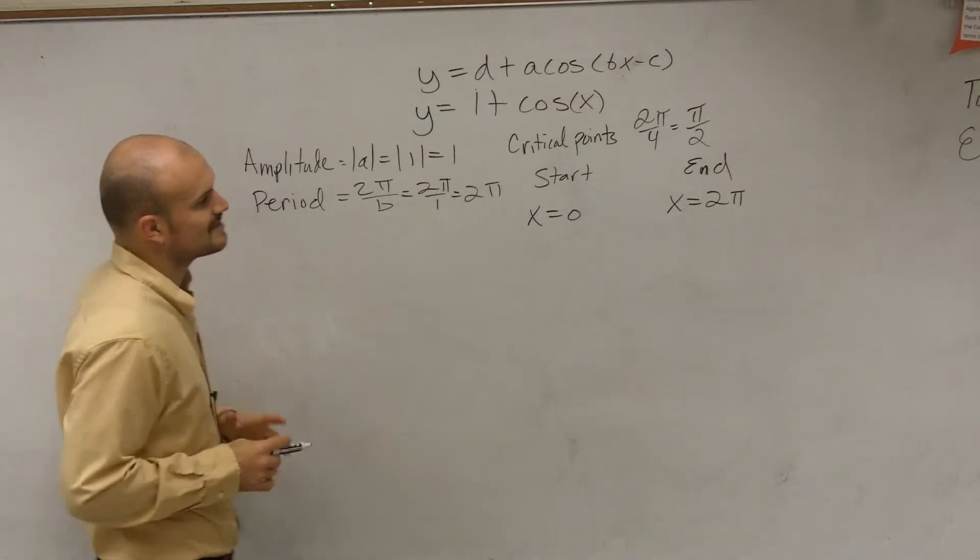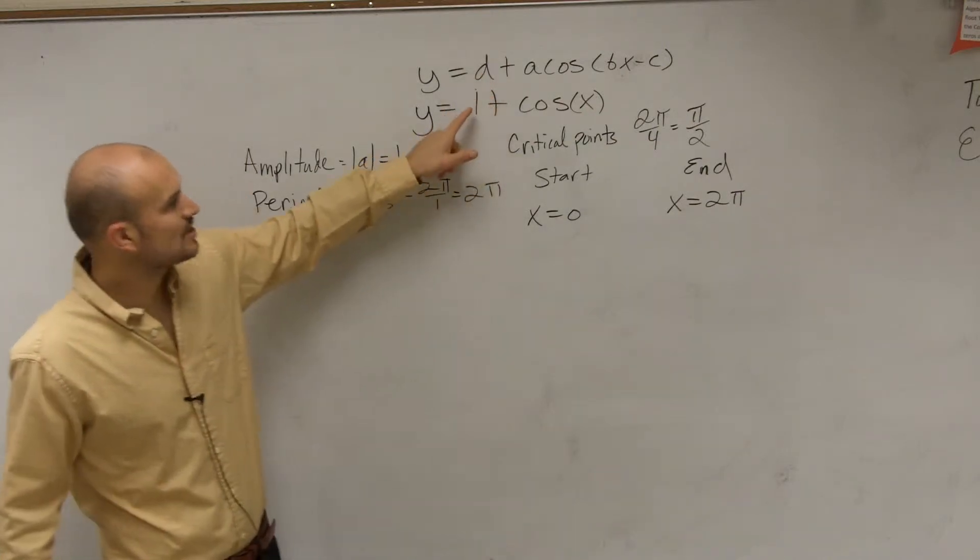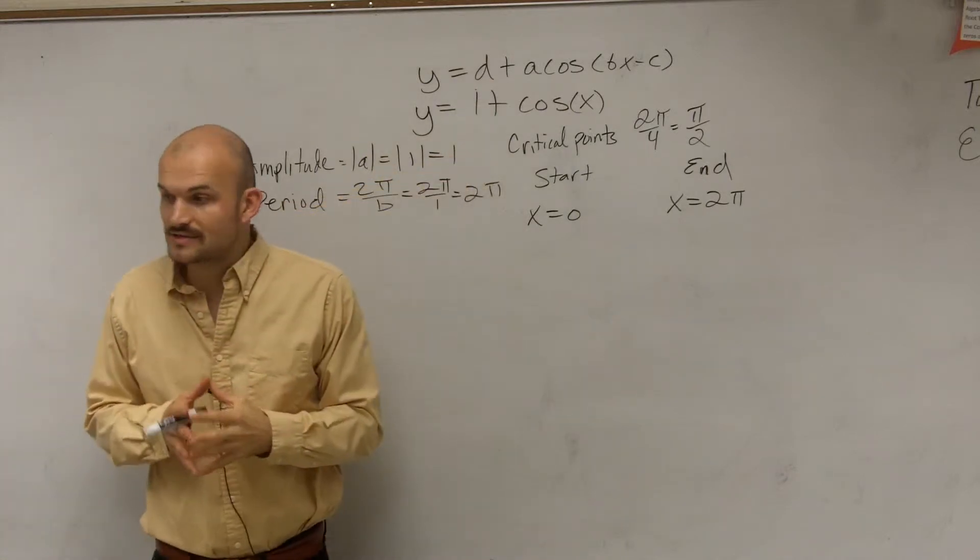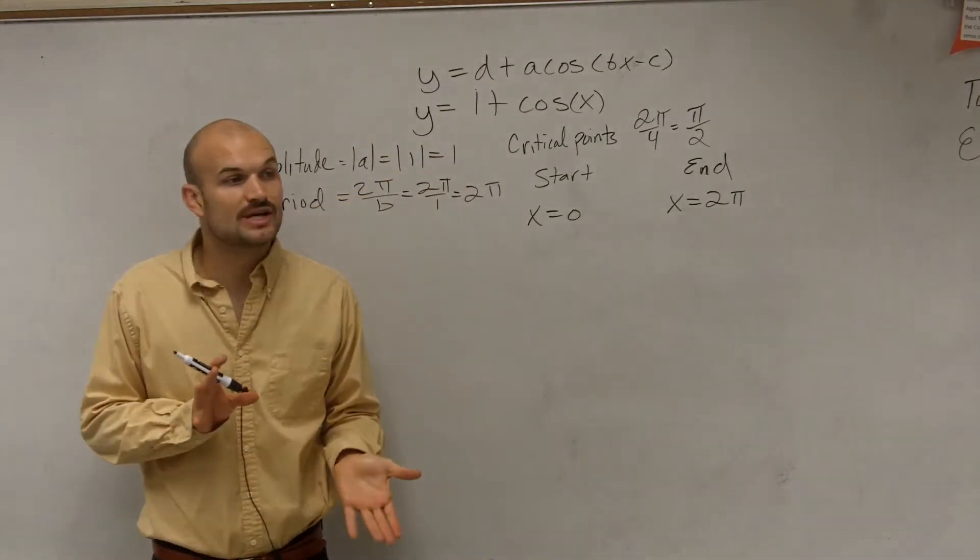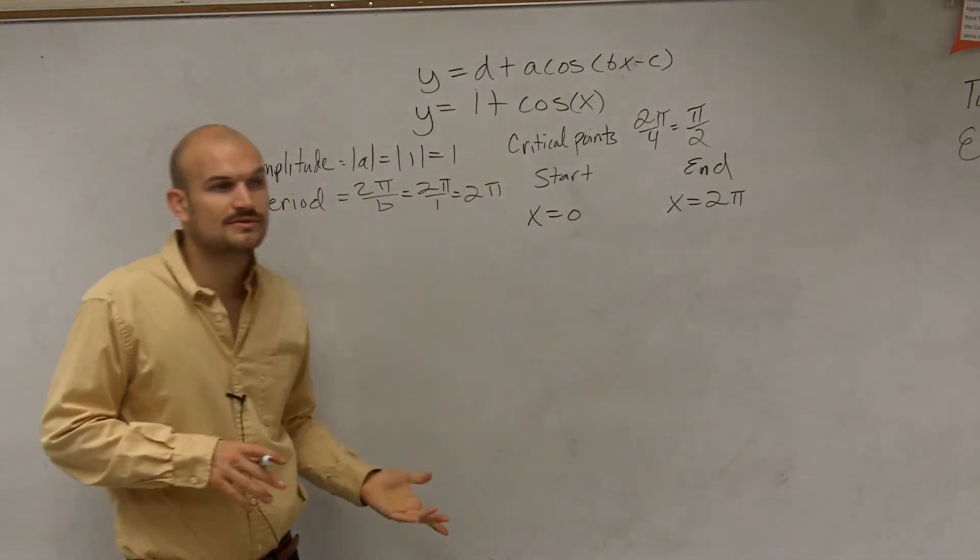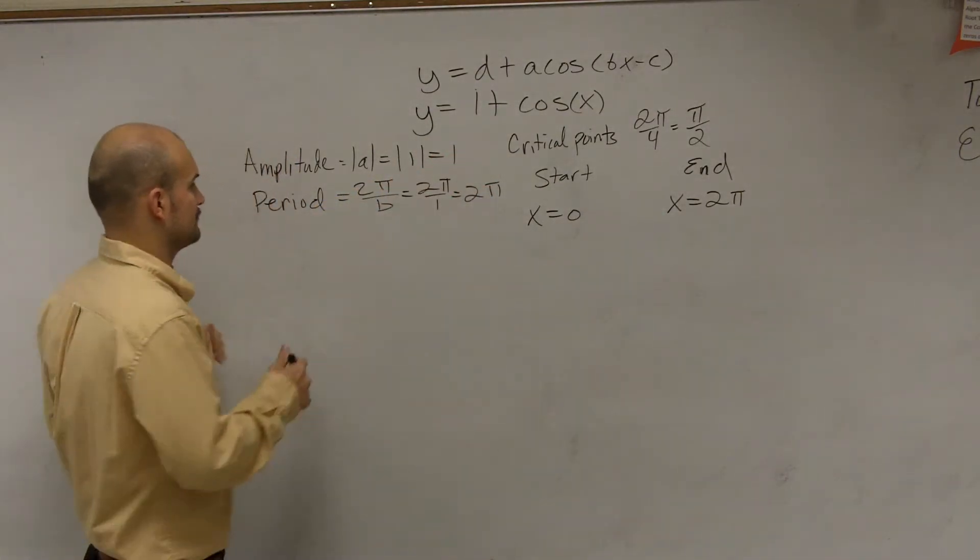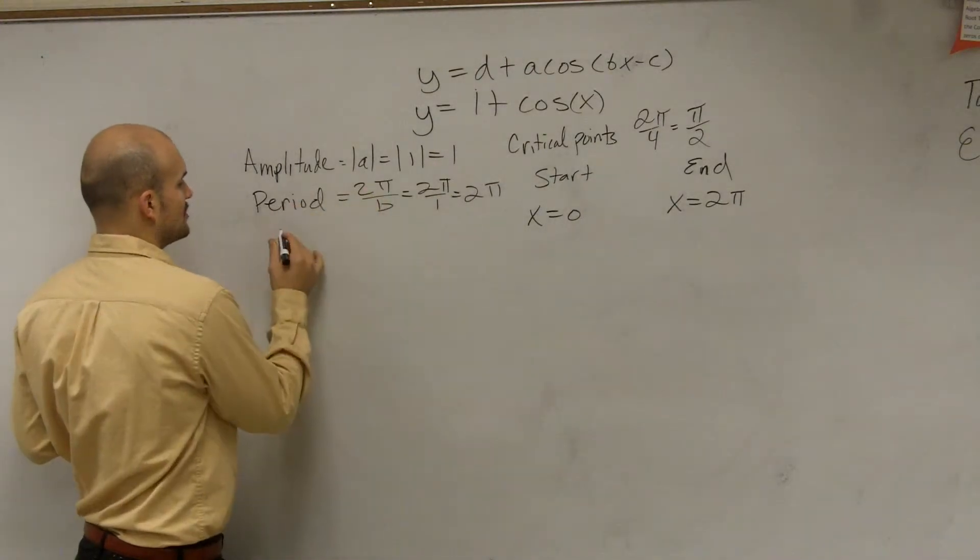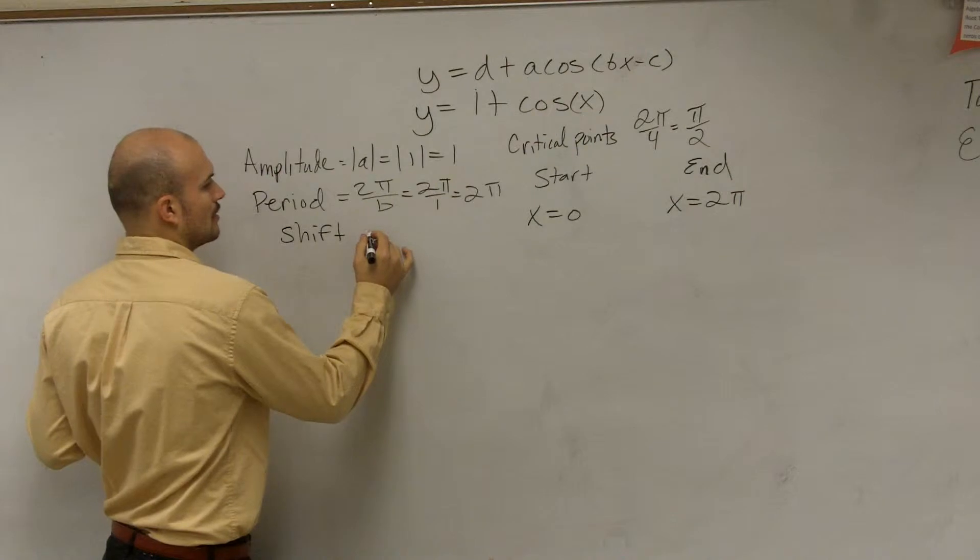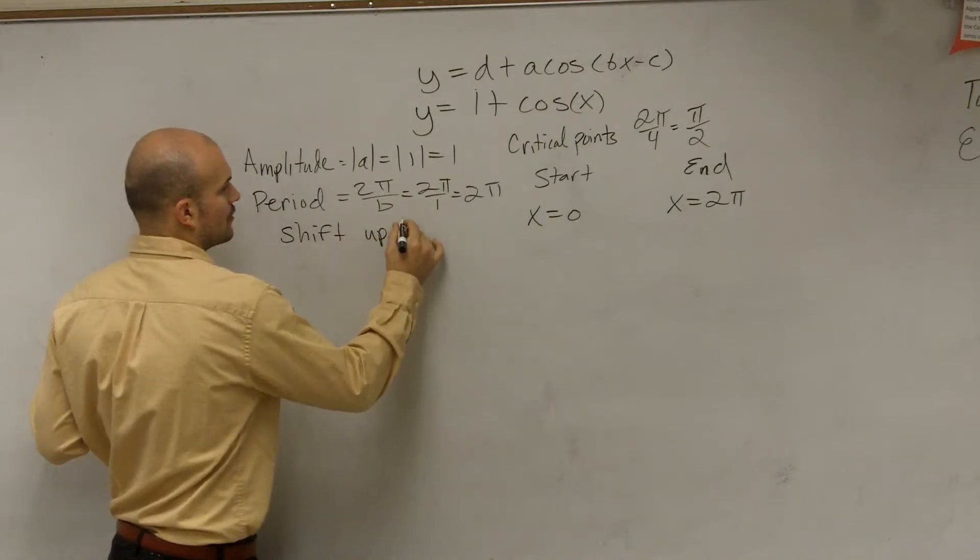So let's go ahead, oh, last thing, let's just go and talk about. If you notice, we have 1 as d. That means a positive d. By looking at our transformations, d is going to tell us to shift vertically. Since this is a positive 1, we are going to now shift up. So you can say shift up 1 unit.